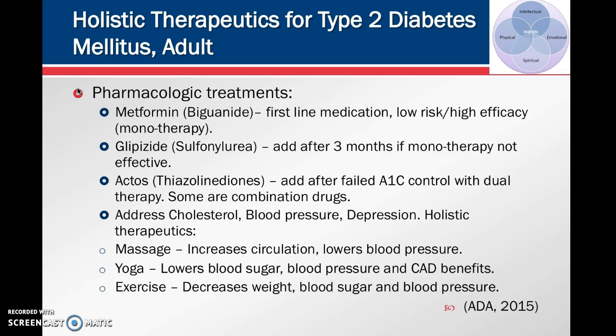Additional medications for the type 2 diabetic include a statin such as Lipitor for cholesterol management, a blood pressure medication to keep blood pressure in the desired range, and an antidepressant if the patient is found to be suffering from depression. Holistic therapeutics include massage, which helps increase circulation and can also lower blood pressure.